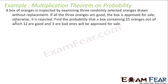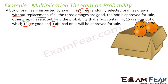A box of oranges is inspected by examining three oranges drawn at random without replacement. If all three oranges are good, the box is approved for sale; otherwise it is rejected. Find the probability that a box containing 15 oranges, of which 12 are good and 3 are bad, is approved for sale.